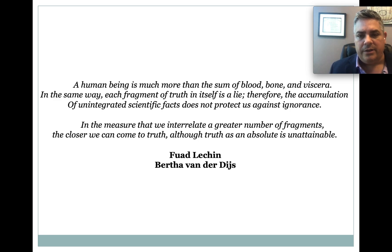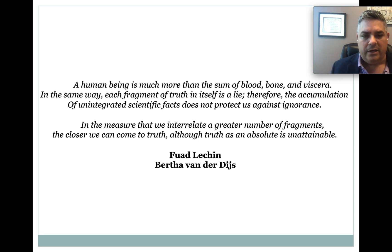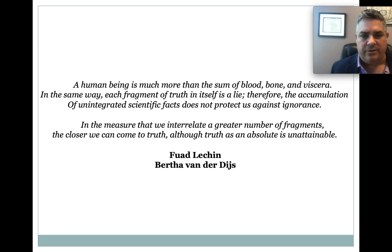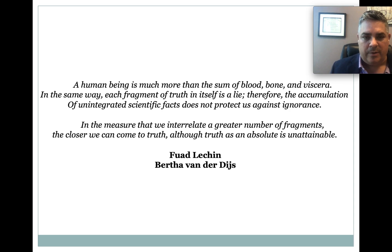So he writes: 'A human being is much more than the sum of blood, bone, and viscera. In the same way, each fragment of truth in itself is a lie. Therefore, the accumulation of unintegrated scientific facts does not protect us against ignorance. In the measure that we interrelate a greater number of fragments, the closer we can come to truth, although truth as an absolute is unattainable.' And I think he's right. This notion that we don't look at one piece of information — we always want to put it in context, drive deeper, and have a greater analysis of the patterns of information that are emerging. That's where we create meaning. And even when we embrace as many data points as possible and derive meaning from them, attaining absolute truth is near impossible. But that's always our goal.